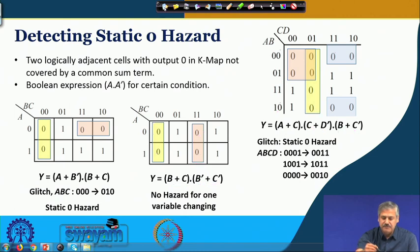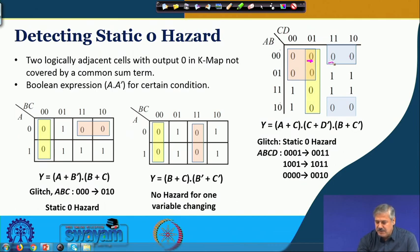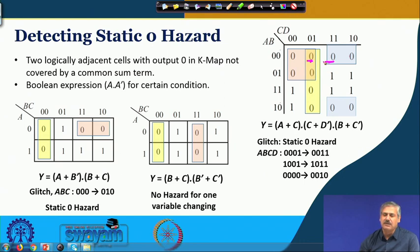Does this optimized expression have a Static-0 Hazard? We need to examine whether logically adjacent 0s are covered by common sum terms. Some logically adjacent 0s are covered by a common sum term, but here is one pair that is not covered by a common sum term, which might lead to a glitch for a specific input combination. There is also another such pair — logically adjacent but not covered by a common sum term.